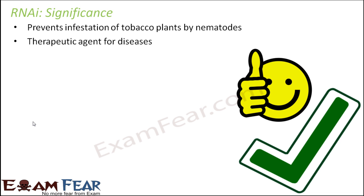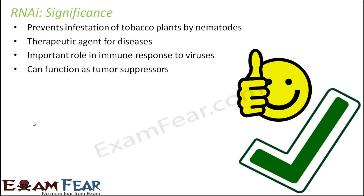RNA interference can act as a therapeutic agent for several diseases, plays an important role in immune response to viruses, and can function as a tumor suppressor. It can suppress tumors by preventing certain mRNAs from producing proteins that cause cell division or tumor growth. If that protein production is blocked, RNA interference pathway acts as a tumor suppressor and does not allow tumors to grow.